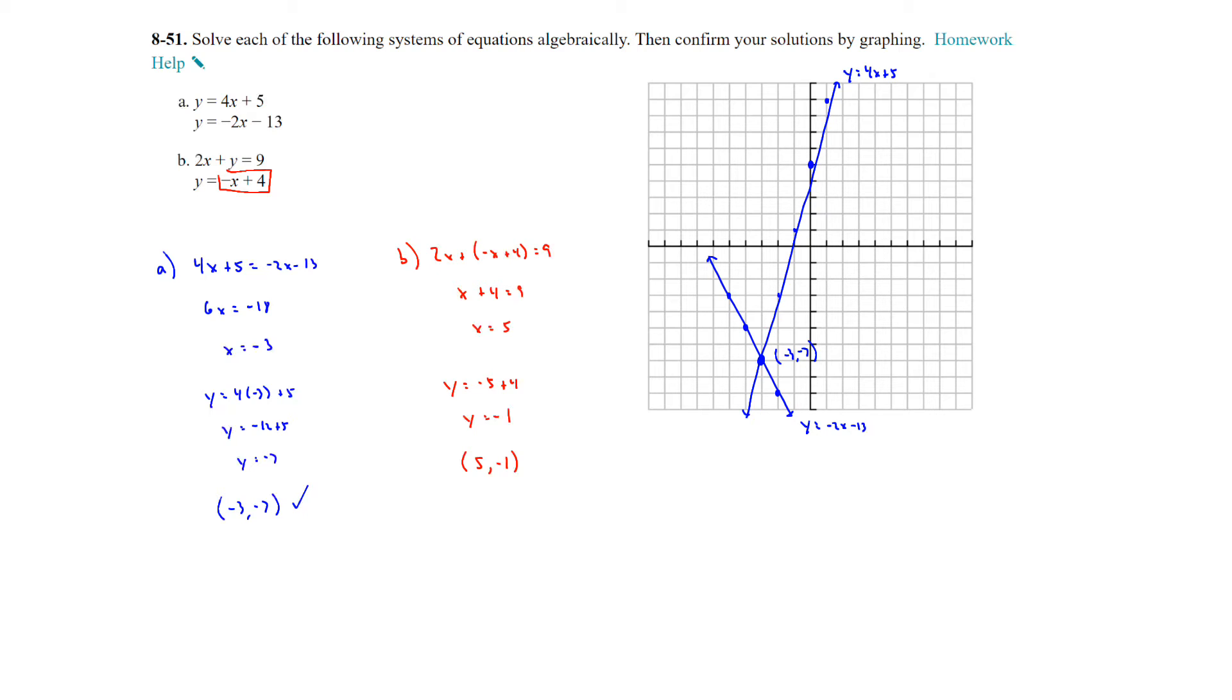And we'll confirm that by graphing y equals negative x plus 4. So plus 4 and then the slope is negative 1. So we'll go down 1 over 1. A couple times here. Graph the line. So this is y equals negative x plus 4. And the other equation is not in slope intercept form, so I'm going to subtract 2x to both sides. Now we have the y intercept at 9 and we can go down 2 over 1. And so we can see right there that we have an intersection and this is y equals negative 2x plus 9. And it intersects right here and this would be at positive 5 negative 1. And that confirms our solution as well.